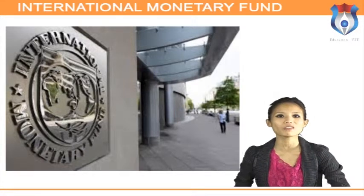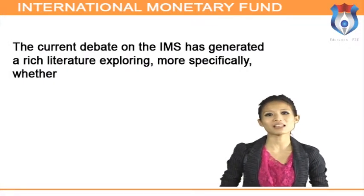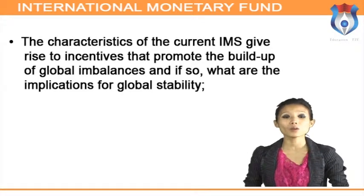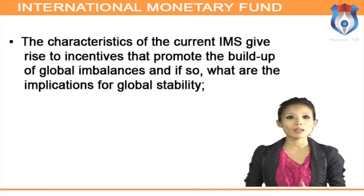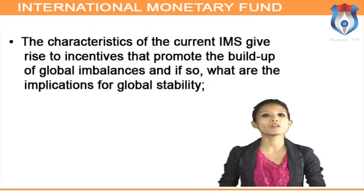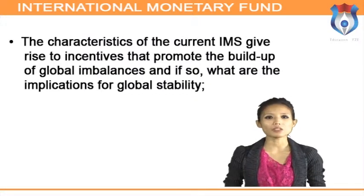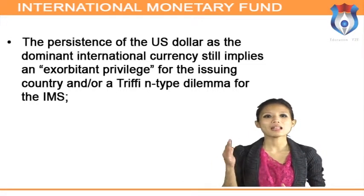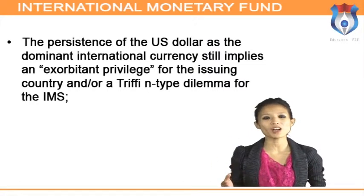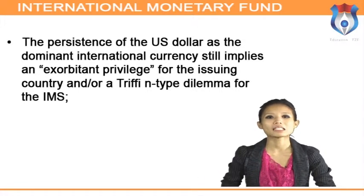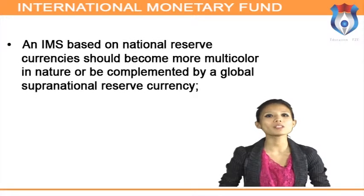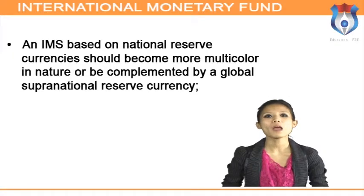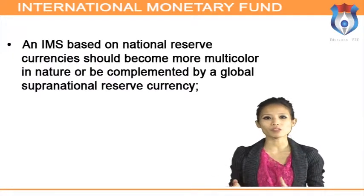The current debate on the IMS has generated a rich literature exploring whether the characteristics of the current IMS give rise to incentives that promote the build-up of global imbalances, and if so, what are the implications for global stability. The persistence of the US dollar as the dominant international currency still implies an exorbitant privilege for the issuing country and a Triffin-type dilemma for the IMS. An IMS based on a national reserve currency should become more multi-polar or be complemented by a global supranational reserve currency.